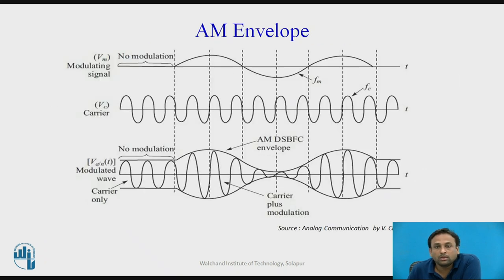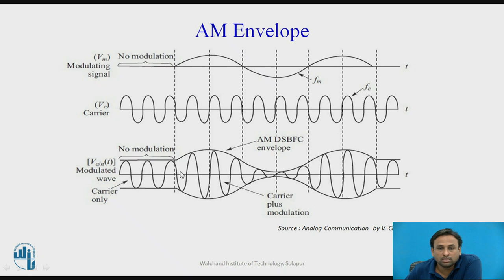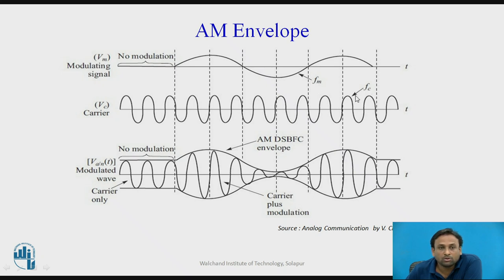This is the output envelope. As shown in the graph, the message signal carries information, the carrier signal is shown separately, and their combined output is the amplitude modulated wave, which contains the carrier signal, LSB, and USB. Where there is no modulation — no information — there is no output. This is the frequency of the modulating signal and this is the frequency of the carrier signal.